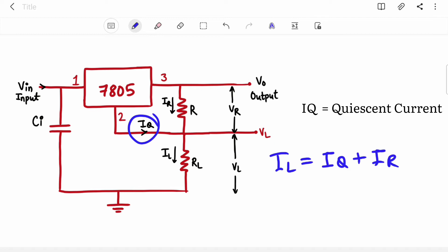Now what is this IQ? IQ is quiescent current. IQ is your standby current. When your IC is performing no work, IQ flows. It is very negligible. It is around 5 milliampere for 7805.